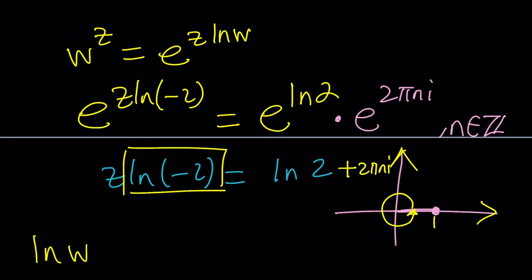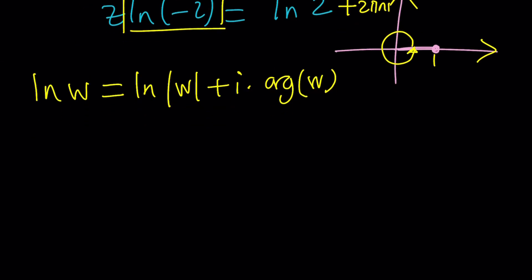Also, if w is a complex number, ln w is given as ln absolute value of w plus i times the argument of w. Well, what is w in this case? Negative 2, right? How do you plot negative 2 on the Argand plane? Just make it sound fancy, right, by saying that. Well, negative 2 is going to be here. Its distance from 0 is 2 units, hence its modulus. And then, this is real, this is imaginary, so on and so forth. And the argument is going to be π radians. Awesome.